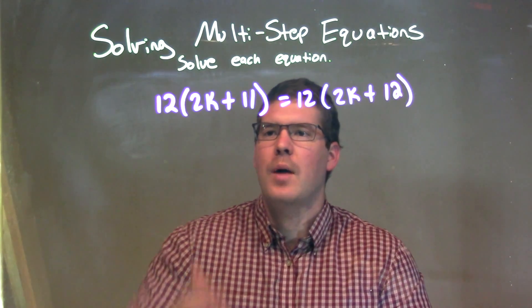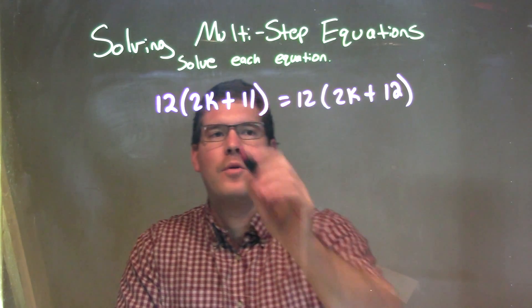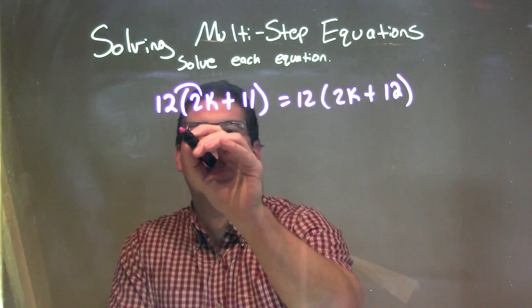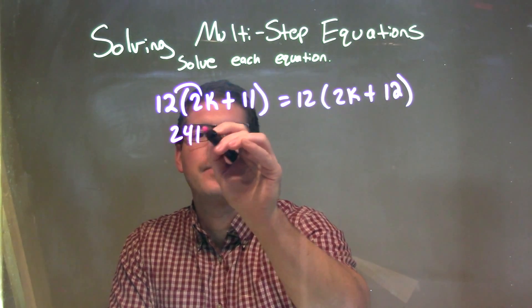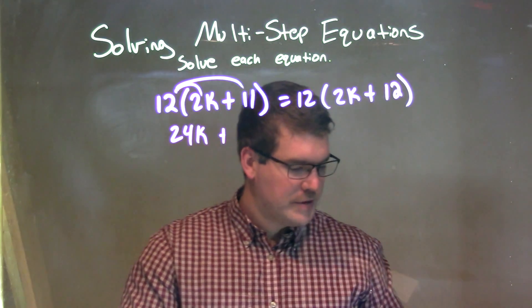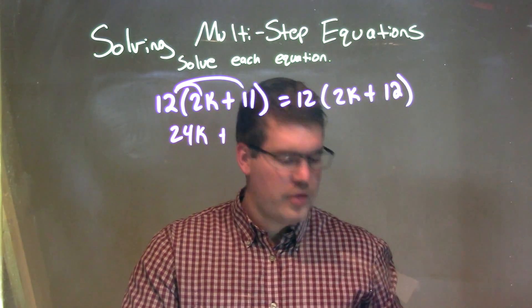What I'm going to do is simplify on each side of the equal sign. I'm going to distribute the 12 across first. So 12 times 2k, which is 24k, plus 12 times 11, which I saved here, which is 132.